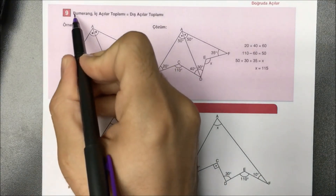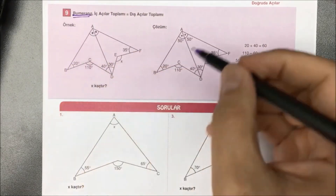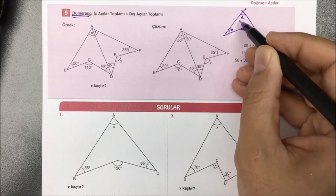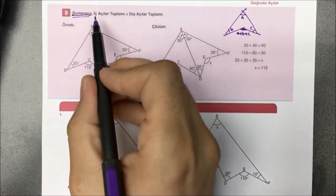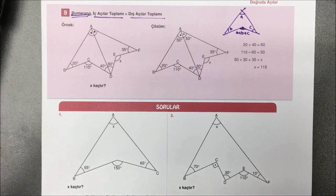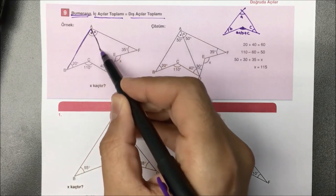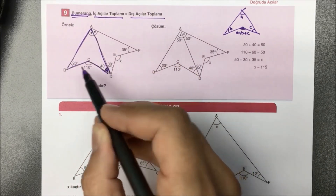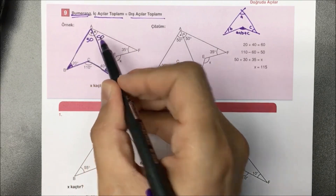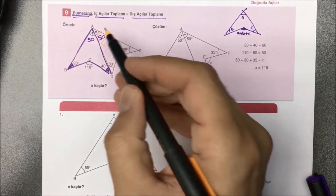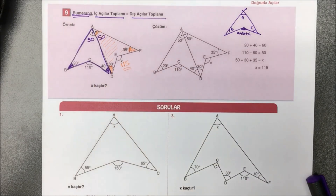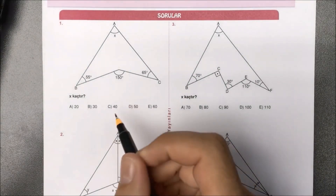Dokuzuncu türümüz bumerang; kimilerinin yumruk yemiş üçgen, kimilerinin füze kuralı dediği kural. İçeride kalan açıların toplamı dışarıdaki açıya eşit olacak: üçünü toplarsak a, b ve c'nin toplamı olacak. Bumerangı soldaki şekilde kullanacak olursak: burada 40 var, 20 var; toplamları 60 yaptı. 60 ile 100'e tamamlamak için açı ortay 50. Sağ taraftaki bumeranga bakalım: 50 var, 30 daha ne yaptı? 80; 35 de ne yaptı? 115. Aradığımız X yanıtı 115 olarak bulunmuş olur.